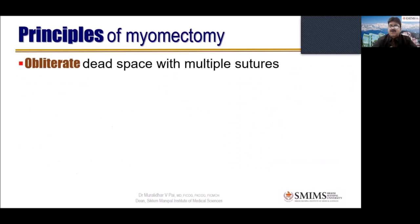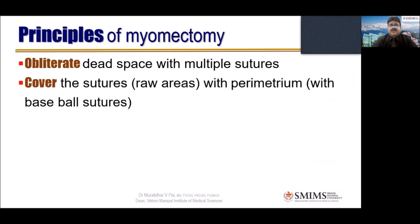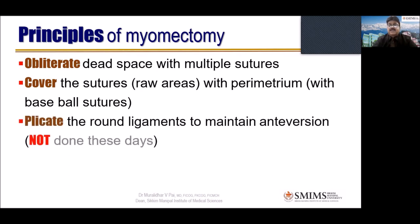Obliterate the dead space with multiple sutures. When you remove a big fibroid, there will be a large dead space which is a good reservoir for blood collection, hematoma, and infection. You must put multiple sutures to obliterate the dead space. Cover the raw areas with peritoneum using baseball sutures if possible — in the upper segment the peritoneum is tightly adherent so this may be difficult, but you have to minimize exposure of the raw area. Plication of the round ligaments to maintain anteversion was done previously to avoid adhesions with the intestines, but it is not done anymore.